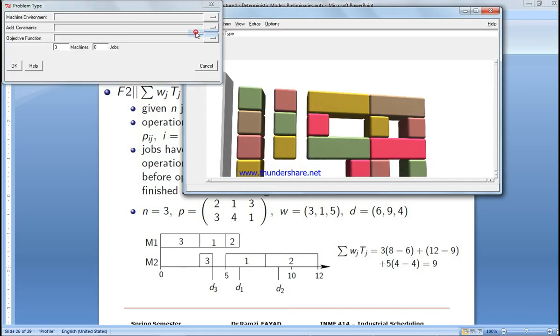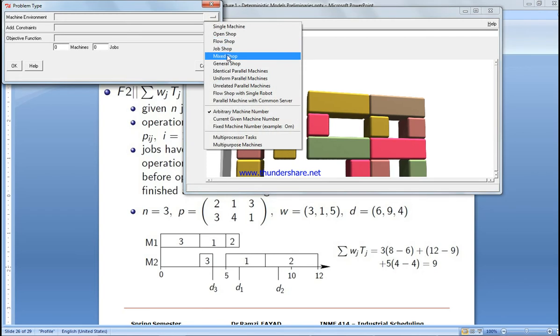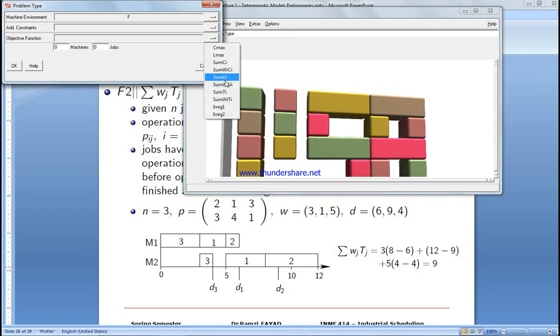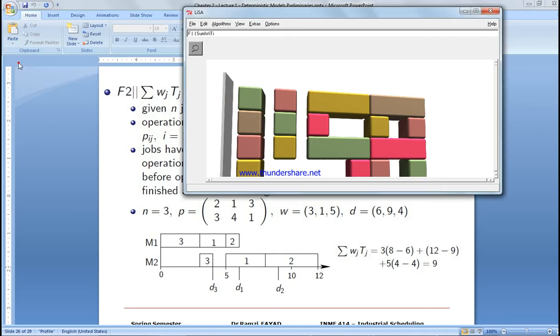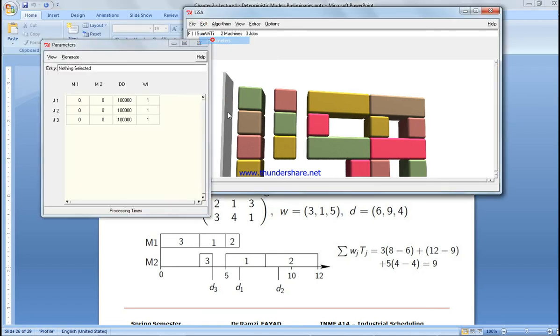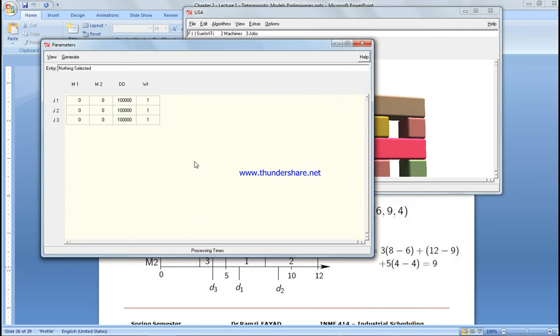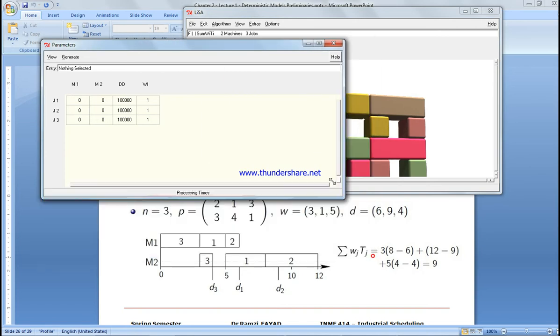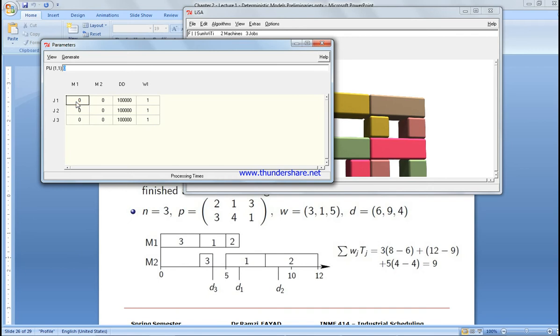We'll create a new problem, select flow shop, and choose sum of weighted tardiness. We have two machines and three jobs. You can see the parameters here - machine one and machine two.